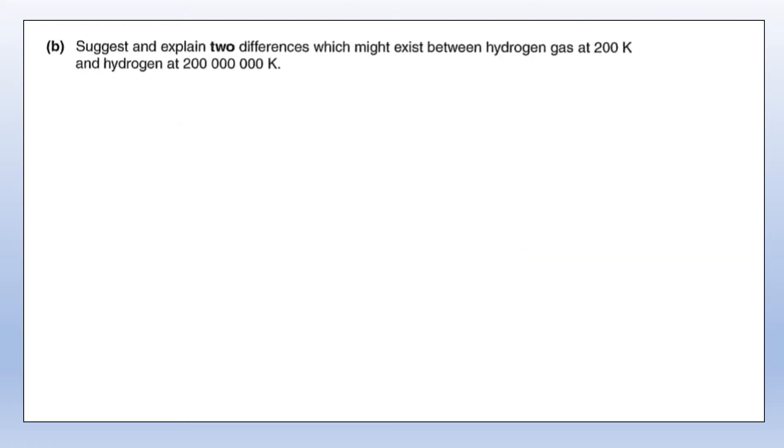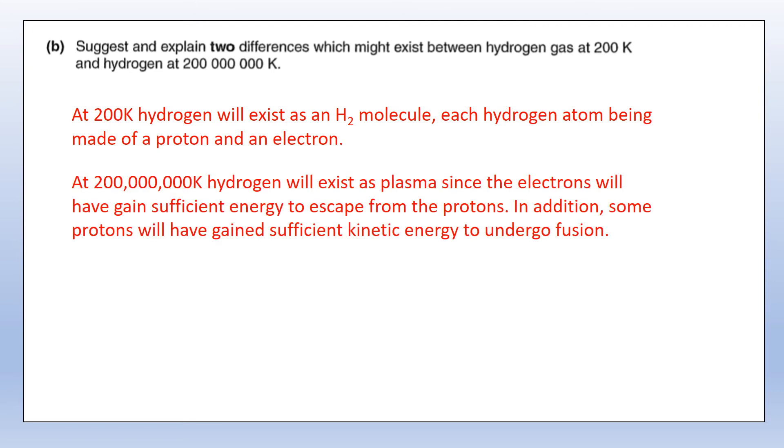Suggest and explain two differences which might exist between hydrogen gas at 200 kelvin and 200 million kelvin. At 200 kelvin, hydrogen will exist as an H2 molecule, and each of those atoms will be one proton and one electron. At 200 million kelvin, it'll now be in plasma form, so the electrons have gained enough energy, they've escaped from the protons, and we form what we call an electron soup. The other thing that might be happening is you might be getting some fusion, so some of these protons will probably have enough kinetic energy that they're now able to fuse and form helium.